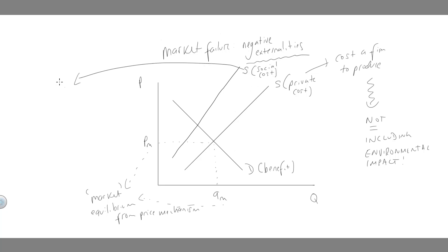So if we think about the social cost, what does that mean? Including environmental damage. So we've got private cost, just what it costs to produce. Social cost, including environmental damage.